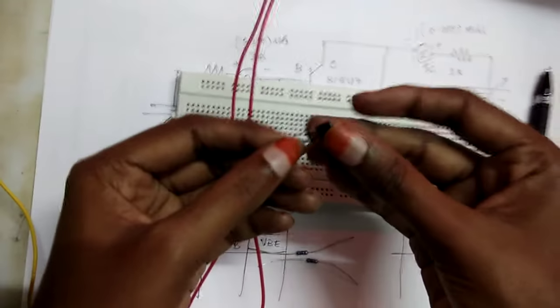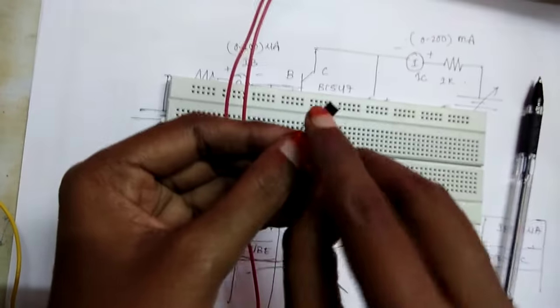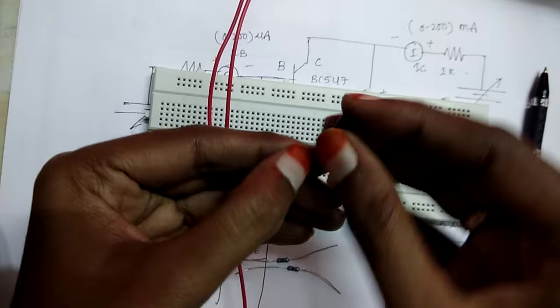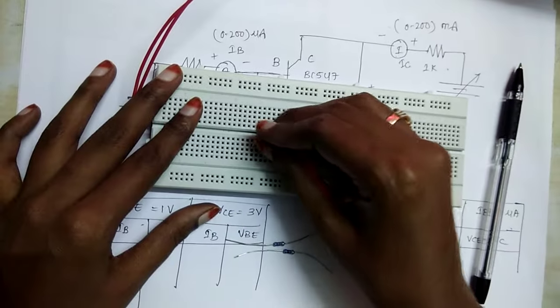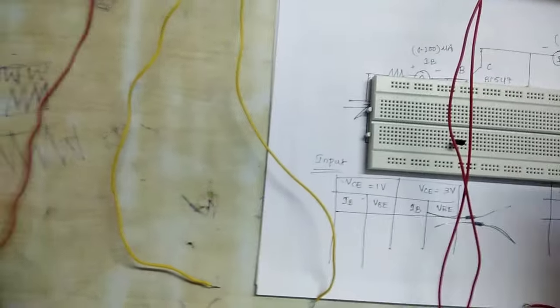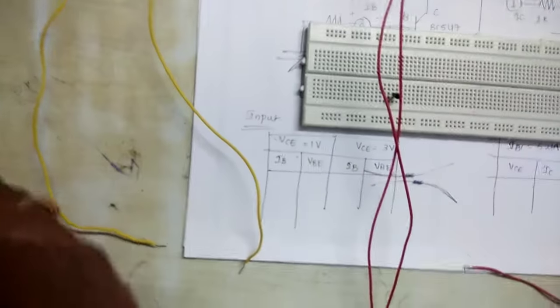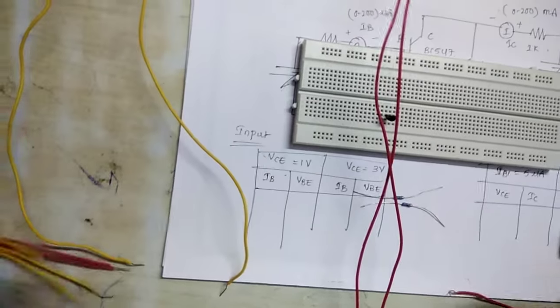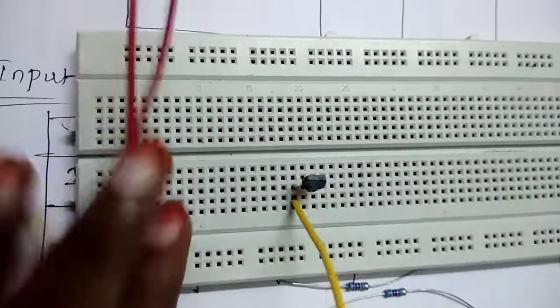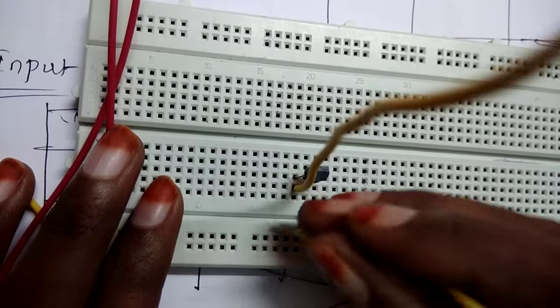We are using the BC547 transistor. It has a semicircle shape, and the terminals in order are emitter, base, and collector. Since this is common emitter configuration, the emitter is connected to ground.